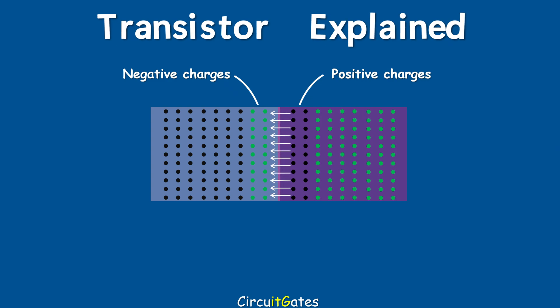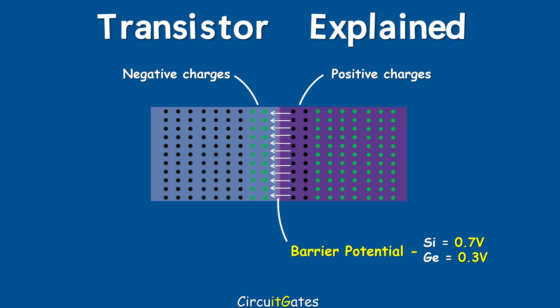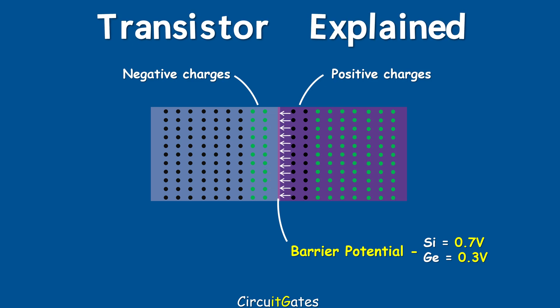The voltage of the electric field is called the barrier potential. The barrier potential of silicon-doped materials is 0.7V and for germanium-doped materials it is 0.3V.